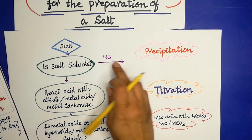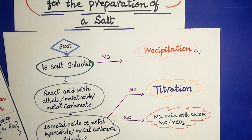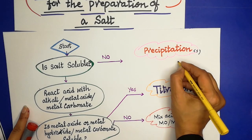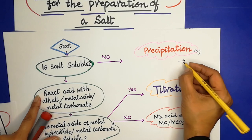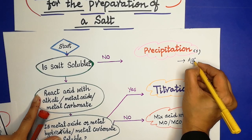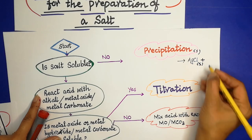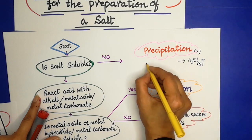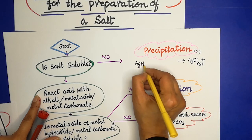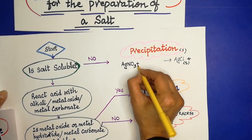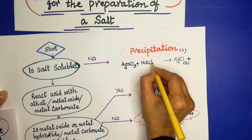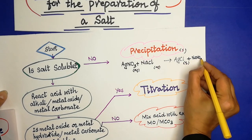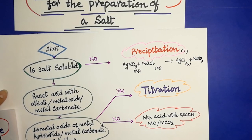If the salt is not soluble — if it is a solid — then the method we use is the precipitation method. For example, to prepare silver chloride (an insoluble salt), we use two soluble salts: silver nitrate (the soluble silver salt) and sodium chloride (the soluble chloride salt). We mix these two soluble salts to produce the insoluble salt by precipitation.